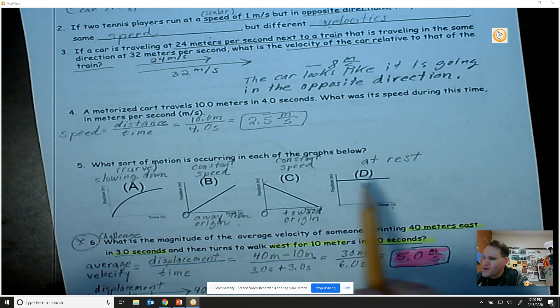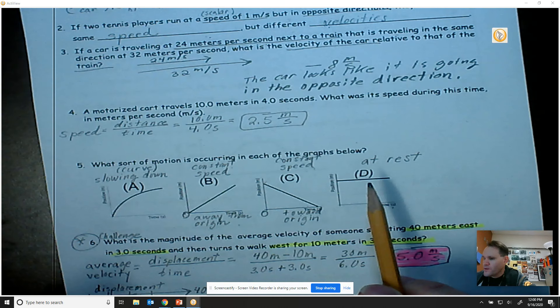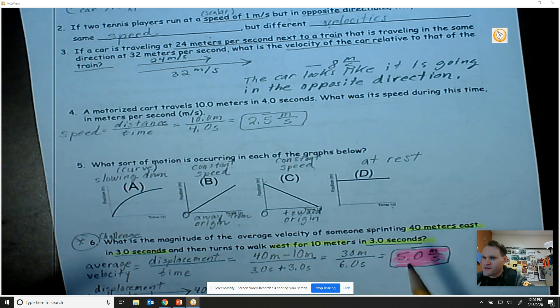For a position versus time graph, if you ever see a flat line that's indicating that the object is at rest - it's not moving, it's stationary. It starts at this position and it remains at this position the entire time, therefore it is at rest.